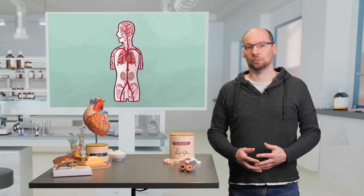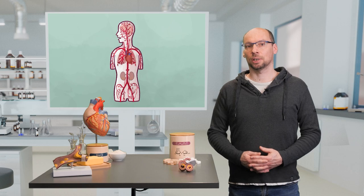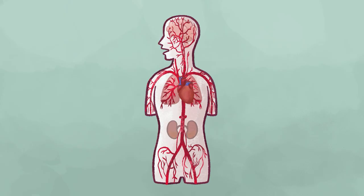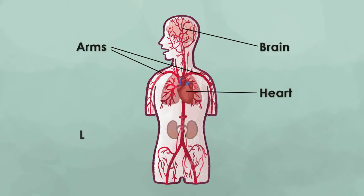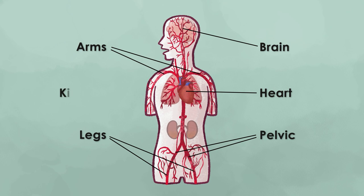Atherosclerosis can affect most of the arteries in our body, including arteries in the heart, brain, arms, legs, pelvis, and kidneys. But some areas are more prone to the development of these fatty depositions, especially when there is shear stress caused by the blood flow — but we come to that later.